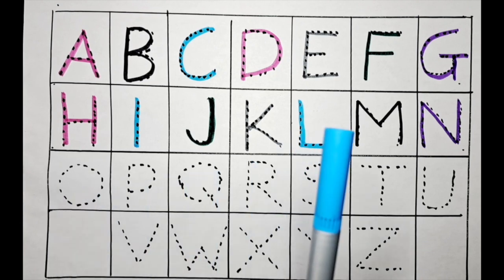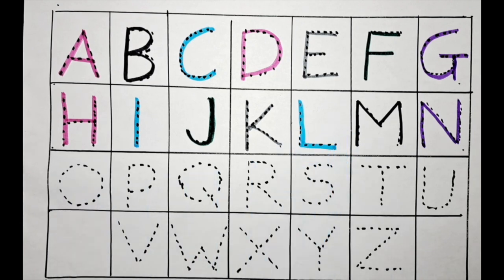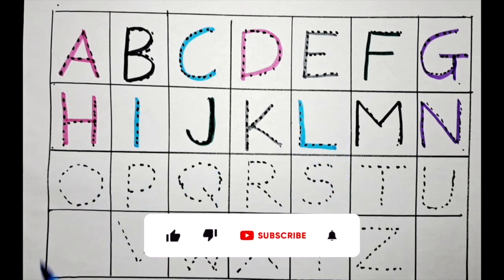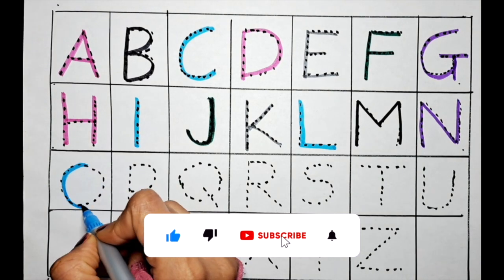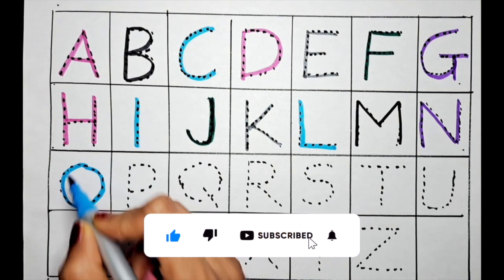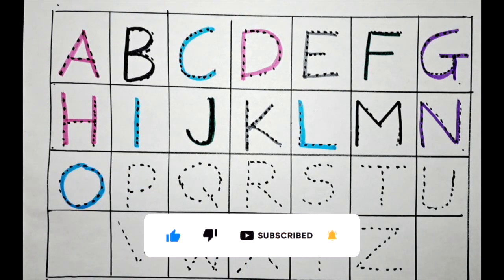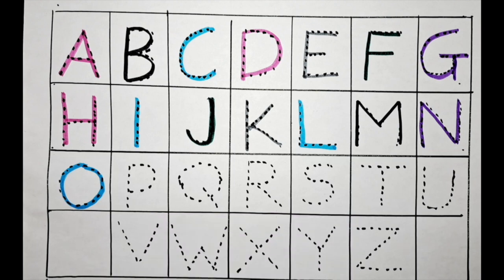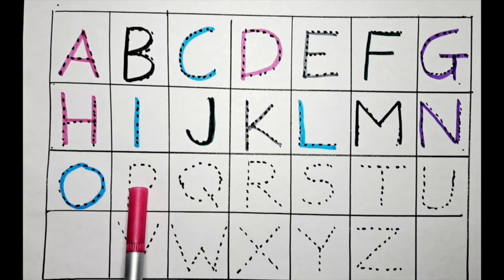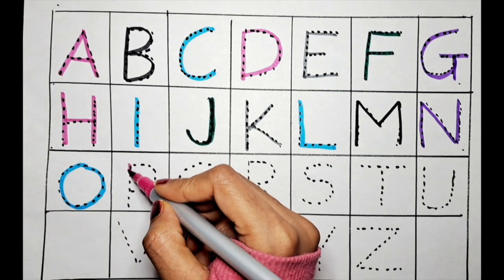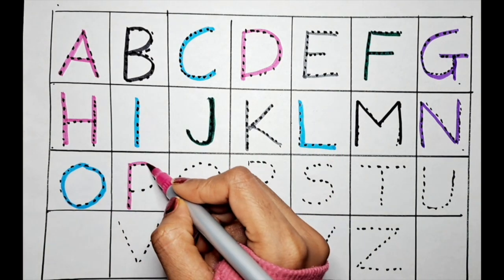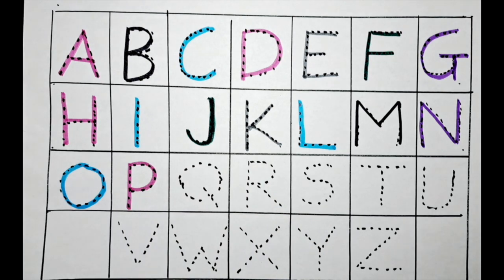This is O. Let's do it with the light blue. O for orange. Let's do the P with the pink color. P for parachute.